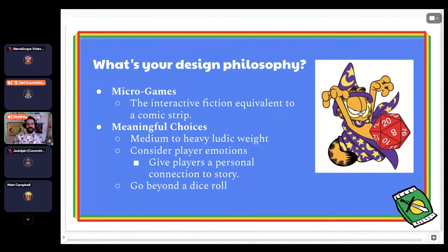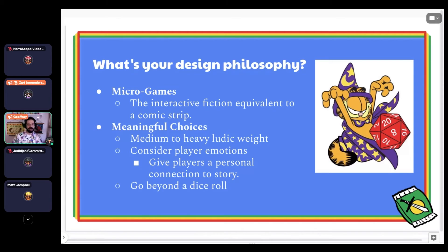I've noticed a lot of narrative talks have featured cats, so I thought I'd put in a cat of my own — Garfield, America's favorite fat cat. My design philosophy: I think of these as micro games. People are typically checking their email for work, so their time is limited in their inbox. I like to send the interactive fiction equivalent of a comic strip — a quick hit of adventure you could play on a lunch break. I like to make choices meaningful, with medium to heavy ludic weight, because there are so few branches and the games are so short.